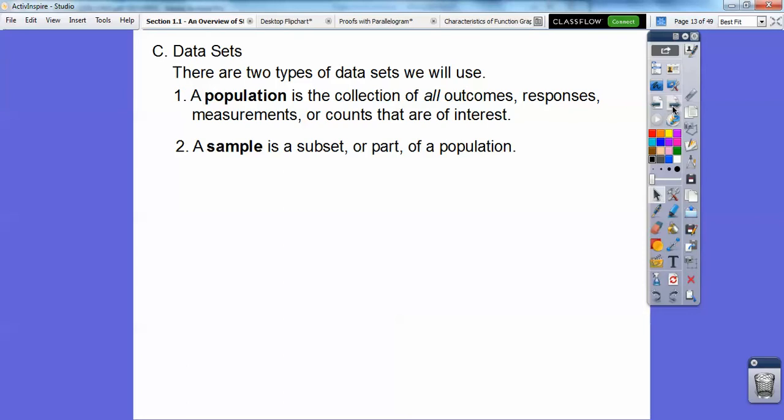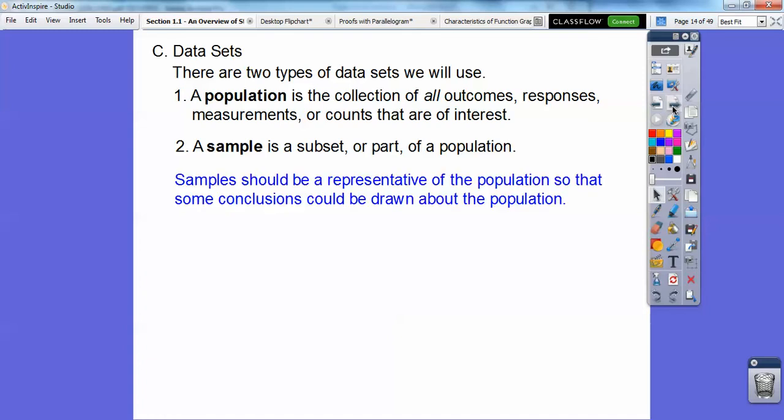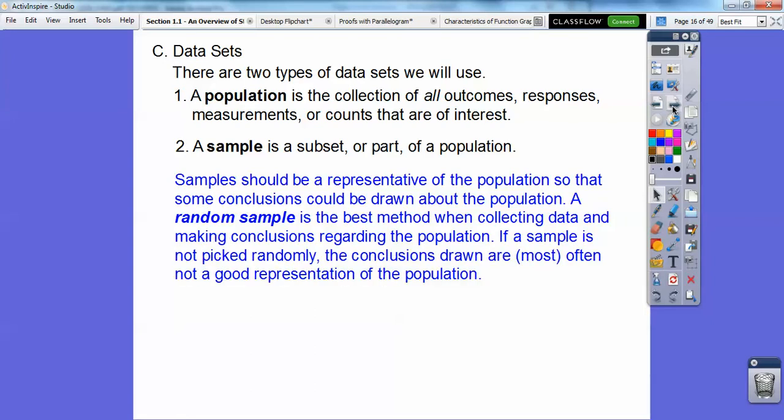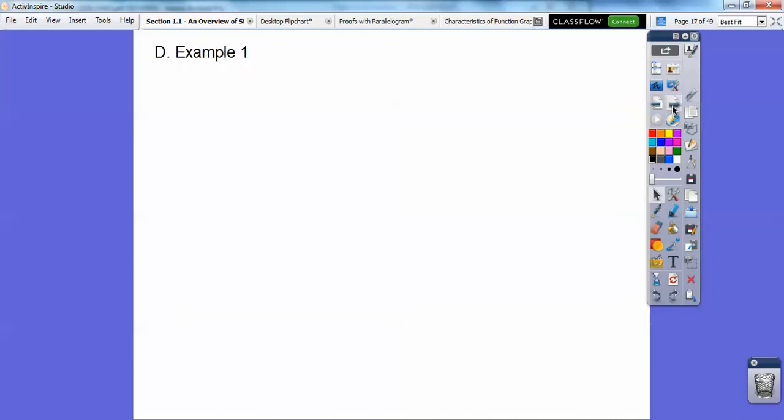Most of the time we study samples to make some educated decisions on our population. Samples should be a representation of the population so that some conclusions, some inferences, some good educated guesses could be drawn about the population. A random sample is always the best method when collecting data and making conclusions regarding the population. If you don't do a random sample, then your conclusions are most often not a good representation of your population.